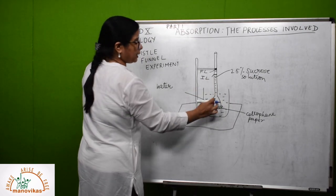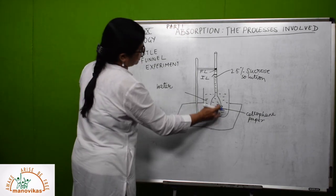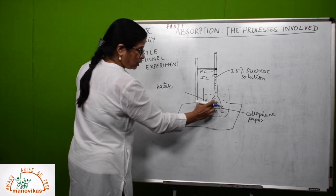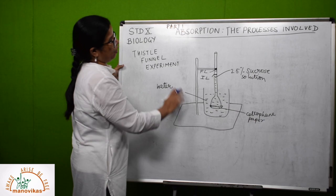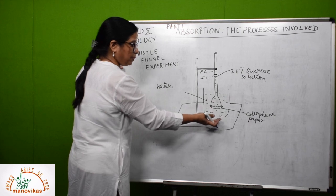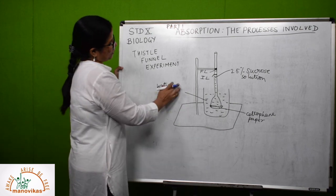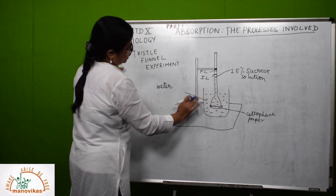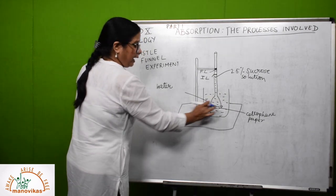From this experiment we derive that water molecules pass through the semi-permeable membrane and move from their region of high concentration to the region of low concentration — thereby demonstrating osmosis. All combinations of concentration differences can be tried, and they always prove the same thing: solvent molecules move from their region of high concentration to low concentration, and the cellophane paper, parchment paper, goat's bladder, or egg membrane acts as a semi-permeable membrane.